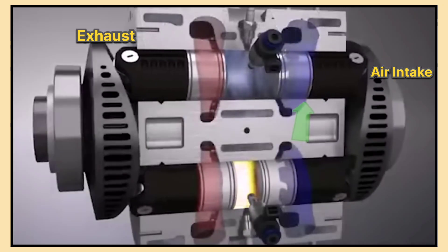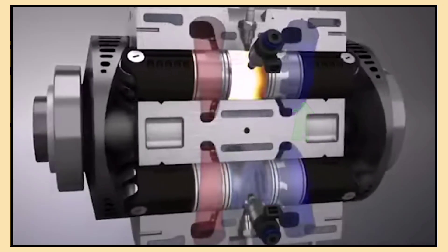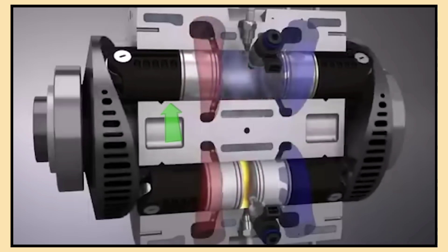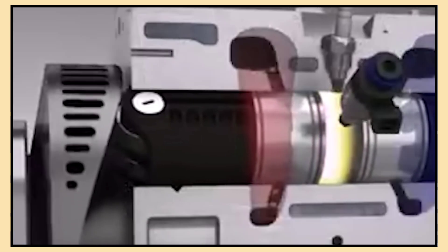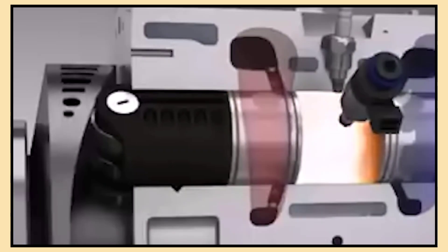The exhaust port is located just ahead of the intake port, so when the piston moves past the intake port, the exhaust port leaves behind a vacuum that draws in fresh air. Fuel is injected into the combustion chamber and the spark plug ignites the fuel air mixture, creating pressure that forces the piston to move.